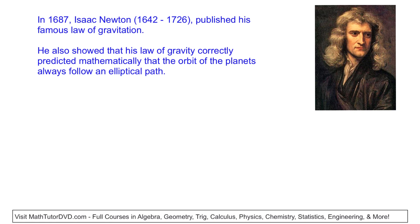Continuing on: we had Copernicus saying the Sun was the center of the solar system, and Kepler saying these planets orbit in ellipses going around the Sun. Some years later, in 1687, the famous Isaac Newton — who lived up to 1726 — published his very famous law of gravitation, which we still use today. The big takeaway is that he used his law of gravity to correctly predict, using math, that the orbit of the planets always follows an elliptical path. Whereas Kepler looked at the night sky and figured out planets must move in ellipses, Newton developed a theory of gravity and an equation describing gravitational force, and used that equation to predict that all planets should move that way.